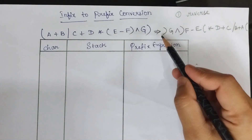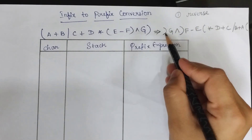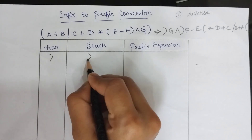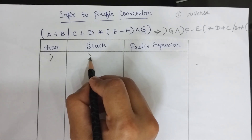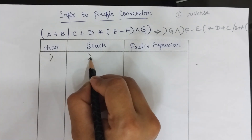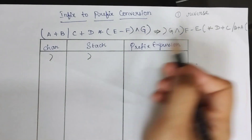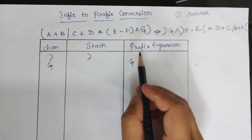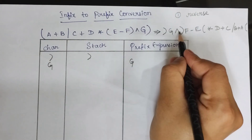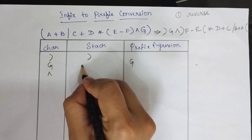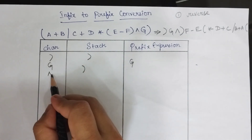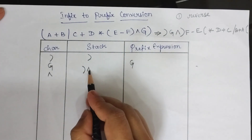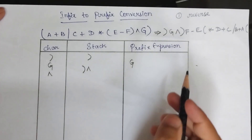The next step is to scan the characters from left to right one by one. The first character is a close parenthesis — just push it into the stack directly, because in prefix conversion this is treated as an open parenthesis. The next character is G, which is an operand, so add it to the prefix expression. The next character is exponential, which is an operator, so push it directly into the stack since it has higher precedence.